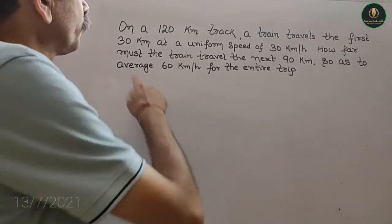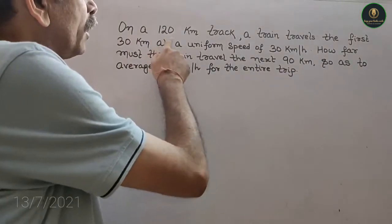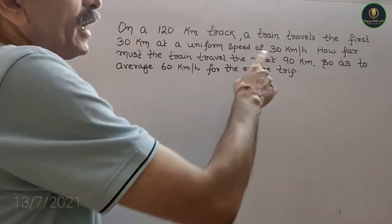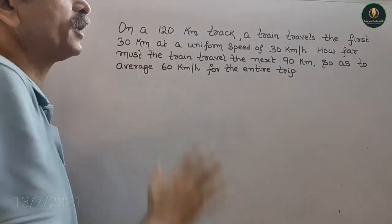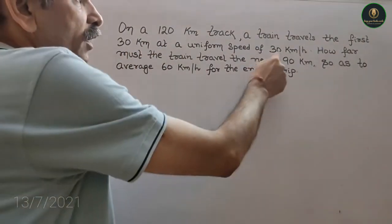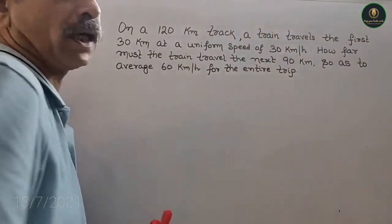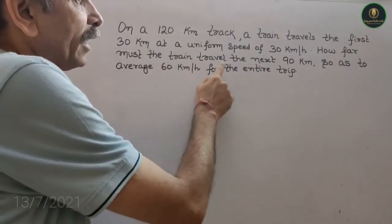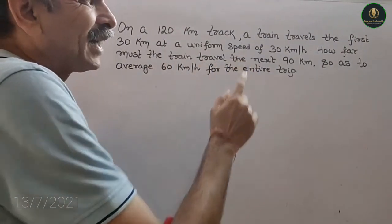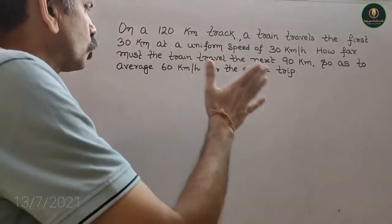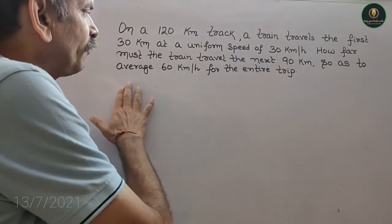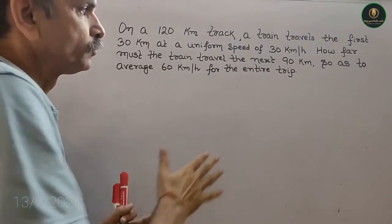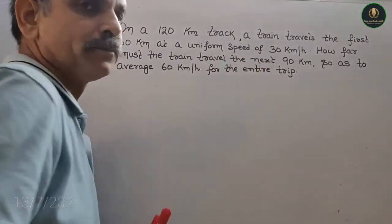Here is a question: on a 120 km track, a train travels the first 30 km at a uniform speed of 30 km per hour. How far must the train travel the next 90 km so as to average 60 km per hour for the entire trip?